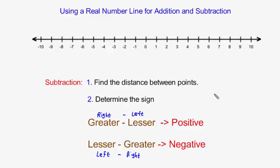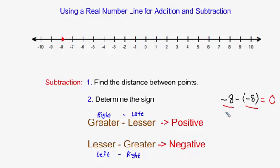I'll do one more. The problem is negative 8 subtract negative 8. The first number is negative 8 and the second number is also negative 8 — it's the same point twice on the number line. To find the distance between the points, the distance between negative 8 and negative 8 is simply 0. The answer involves 0. Step 2 would normally be to determine the sign, but 0 is a special case — it is neither positive nor negative. Positive 0 and negative 0 both simplify to 0, so negative 8 subtract negative 8 equals 0.